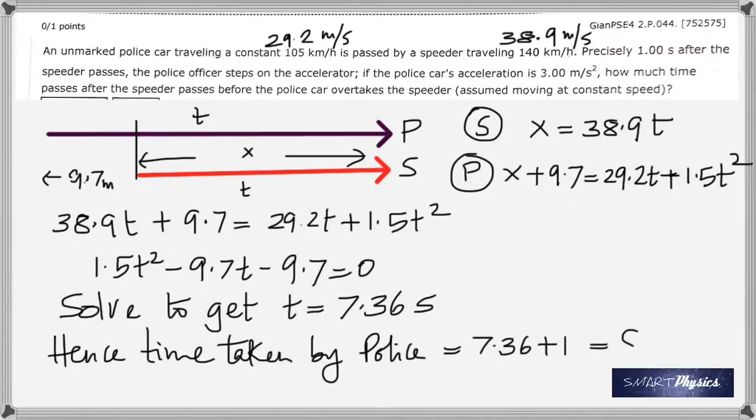Because for that one second the cop was not moving. So he's taken 8.36 seconds to catch up with the speeder, and I hope you understood this problem. Thank you.